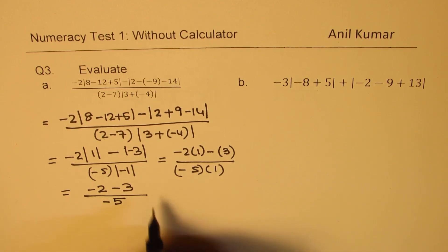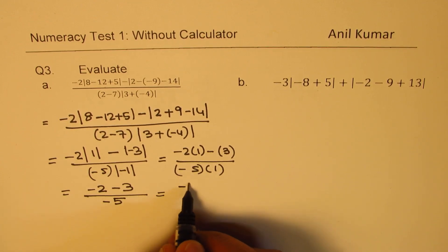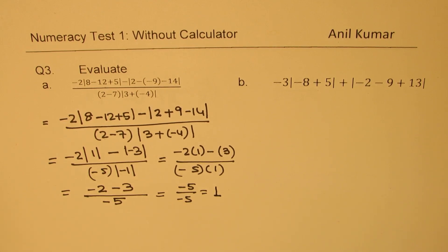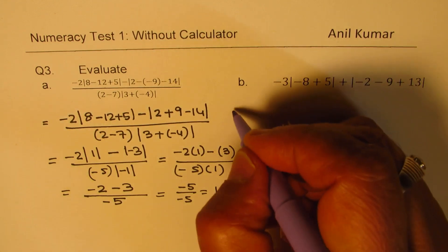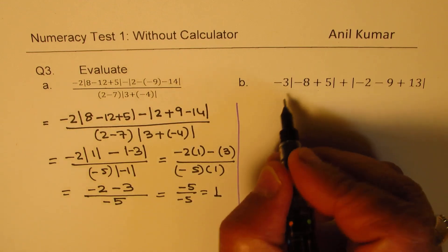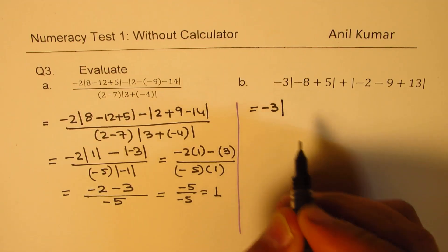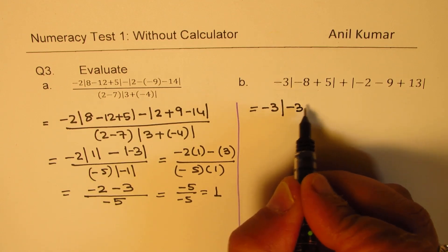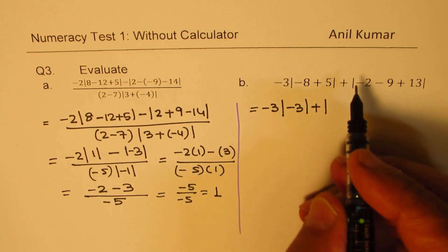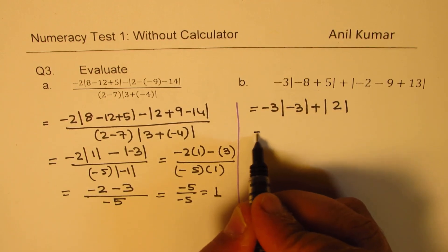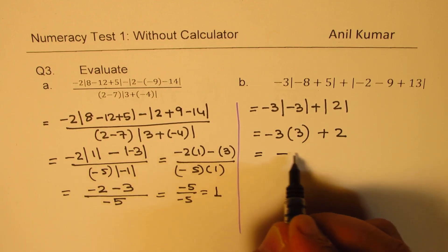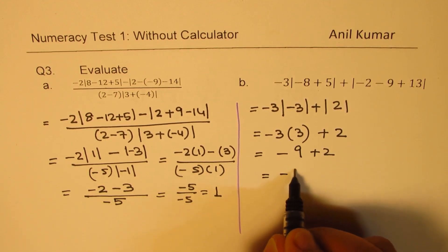So we get minus 2 times 1 minus positive 3 — the absolute value of minus 3 — times minus 5 times plus 1. Minus 5 times plus 1 is minus 5. What we have is minus 5 over minus 5, which equals 1. For part (b): minus 3 times absolute value of (minus 8 plus 5 is minus 3), plus absolute value of (minus 2 minus 9 is minus 11), plus 13 equals plus 2. That gives minus 3 times 3 plus 2, which is minus 9 plus 2, equals minus 7.